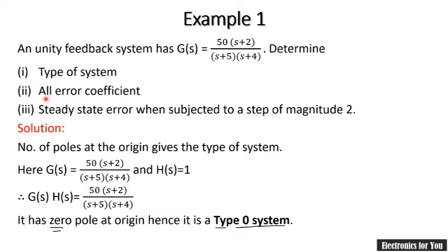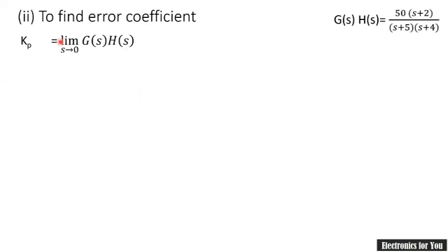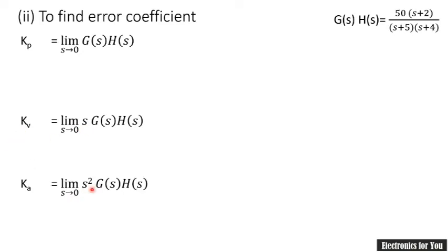Now we will find all error coefficients — the static error coefficients. These are: the positional error constant Kp, velocity error constant Kv, and acceleration error constant Ka. The formula for Kp is the limit as s→0 of G(s)·H(s); for Kv, multiply by s before taking the limit; and for Ka, multiply by s² before taking the limit.